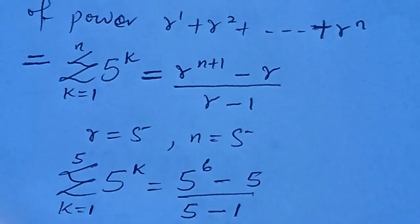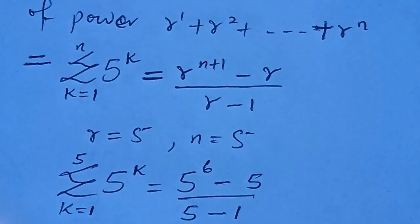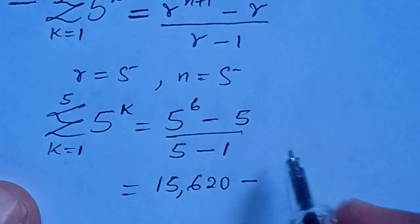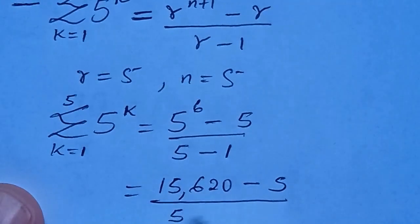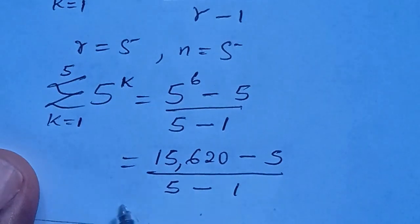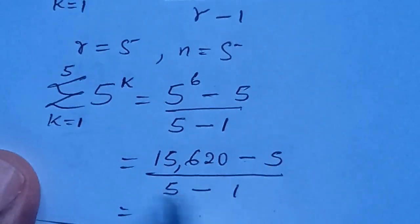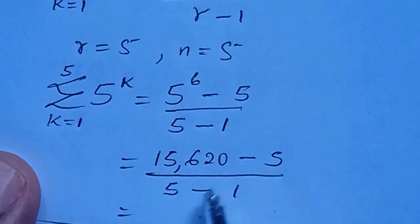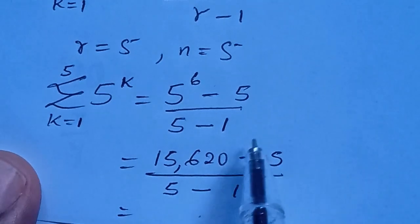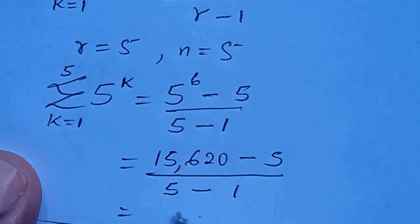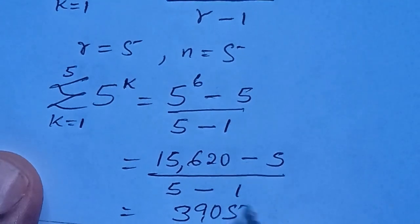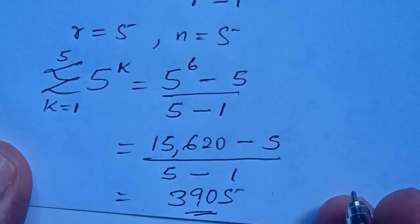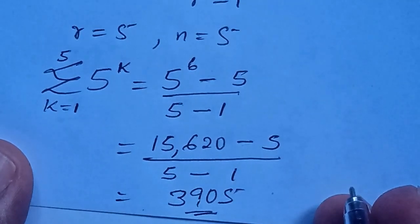Computing the numerator and denominator: 15625 minus 5 equals 15620, and 5 minus 1 equals 4. So we have 15620 divided by 4. If we compute all these values we arrive at the same answer as the previous method, which is three thousand nine hundred and five, 3905. That comes to the end of the lesson — hope you enjoyed this one!